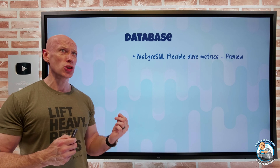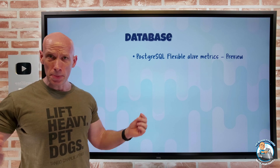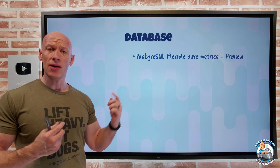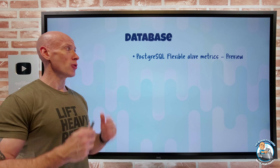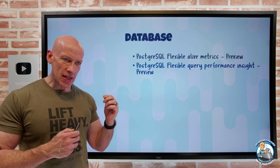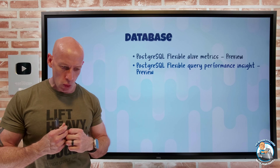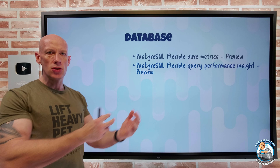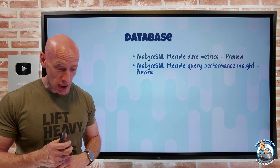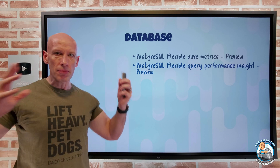On the database side, a whole set of PostgreSQL Flexible updates. The Alive metrics are in preview — a new 'database is alive' metric that tells you if your database is available. It's a one-minute signal and you can look back 93 days of availability history. There's also a new query performance insight, built on top of the query store, giving insight into query performance executed against the database. You can identify slow or long-running queries, see wait statistics for certain queries, and detect changes in query performance that may hint at needed index changes or maintenance.